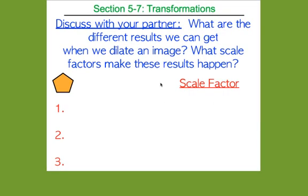Yesterday we dealt with congruence — how to find missing side lengths and angle measures when we know we have two equal polygons. Today we're going to talk about how we get those polygons, how we move objects around so we end up with the correct shape or similar shapes, because knowing how it's moving makes it easier to write the congruence statements.